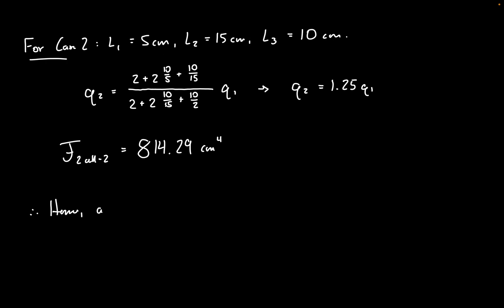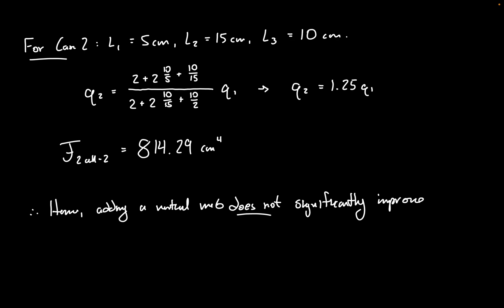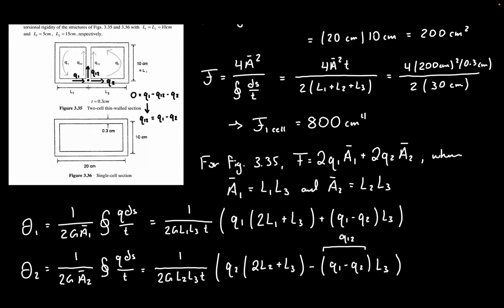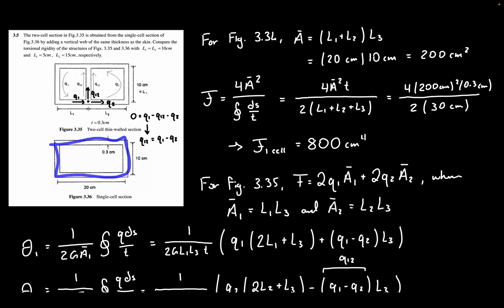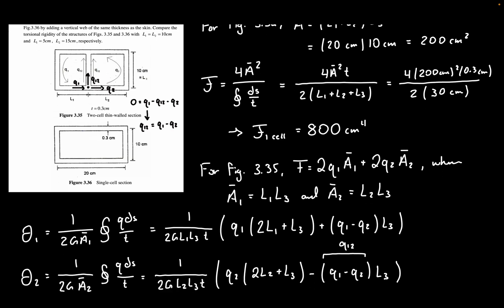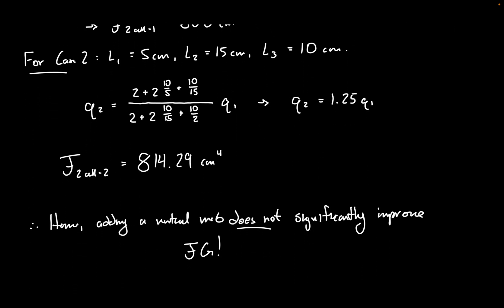Hence, adding a vertical web does not — I repeat, does not — significantly improve torsional rigidity (JG). The single section gave J equals 800 cm⁴, while both web configurations gave 800 and 814.29 cm⁴ respectively. The difference of only about 14.29 cm⁴ shows that shifting the web position makes very little difference in torsional rigidity.